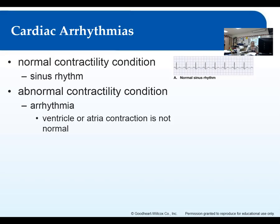Atrial arrhythmias are usually not as serious as ventricular arrhythmias. Atrial ones can often be resolved long-term or managed with medication. Ventricular arrhythmias are a different story — blood leaving the right ventricle goes to the lungs for oxygen, and blood leaving the left ventricle goes to the rest of the body including the brain. So it's a big deal when the ventricles have an arrhythmia. Ventricular ones are significantly more damaging than atrial ones.